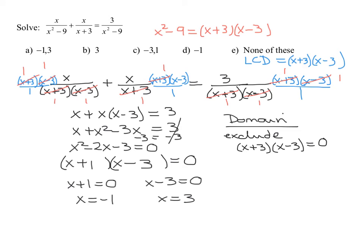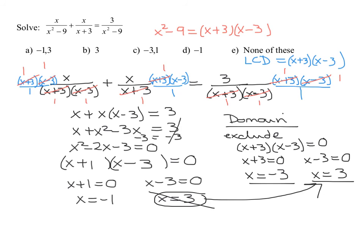So we know that the domain has to exclude numbers that make x plus 3 times x minus 3 equals 0. So set each of those equal to 0. And so I'm going to get subtract 3 from both sides. So I have to exclude negative 3. Add 3 to both sides for this one. I have to exclude positive 3. So looking at our solutions, are any of them not in the domain? This one is not allowed. It's not in the domain of my problem. It is an extraneous solution.